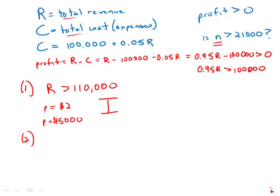Statement number two tells us for each unit of Product X sold last year, the company's revenue was $5. So that means we sold N units, 5 times N equals the revenue. And so 0.95 times R, or 0.95 times 5N, has to be greater than 100,000.